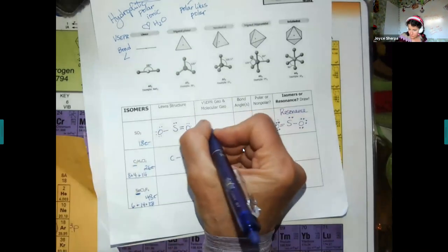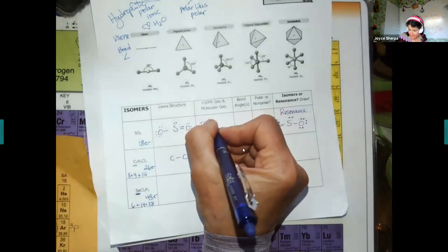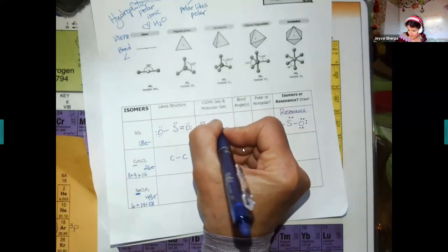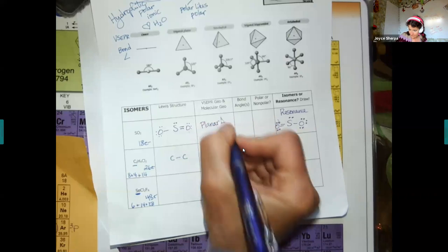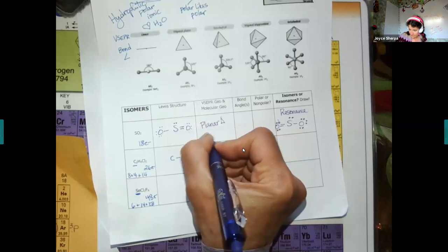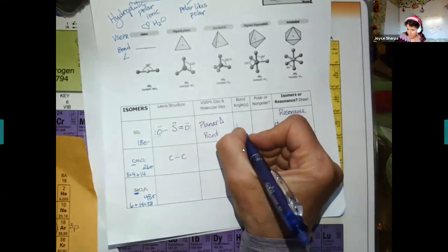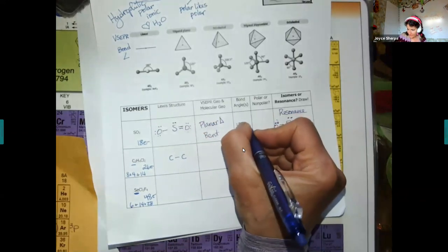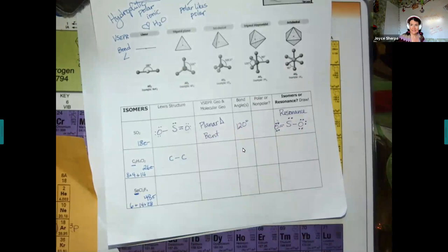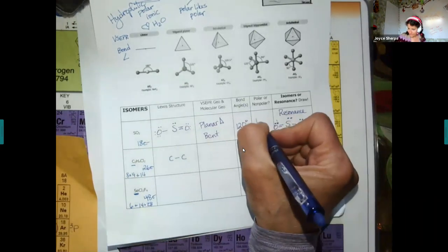The geometry here is planar triangle bent, 120 degrees, and it is polar.